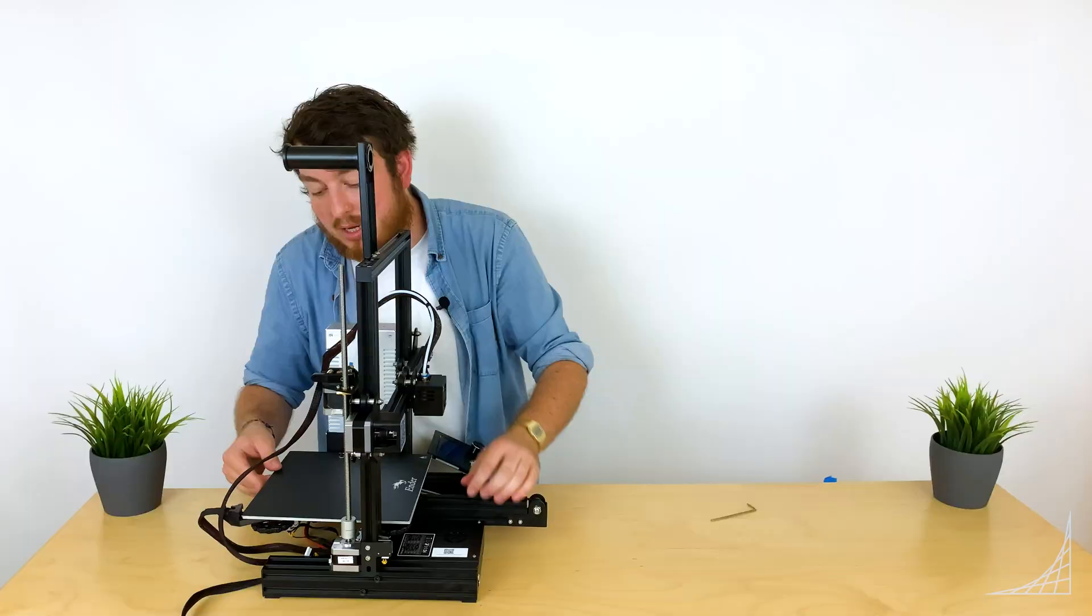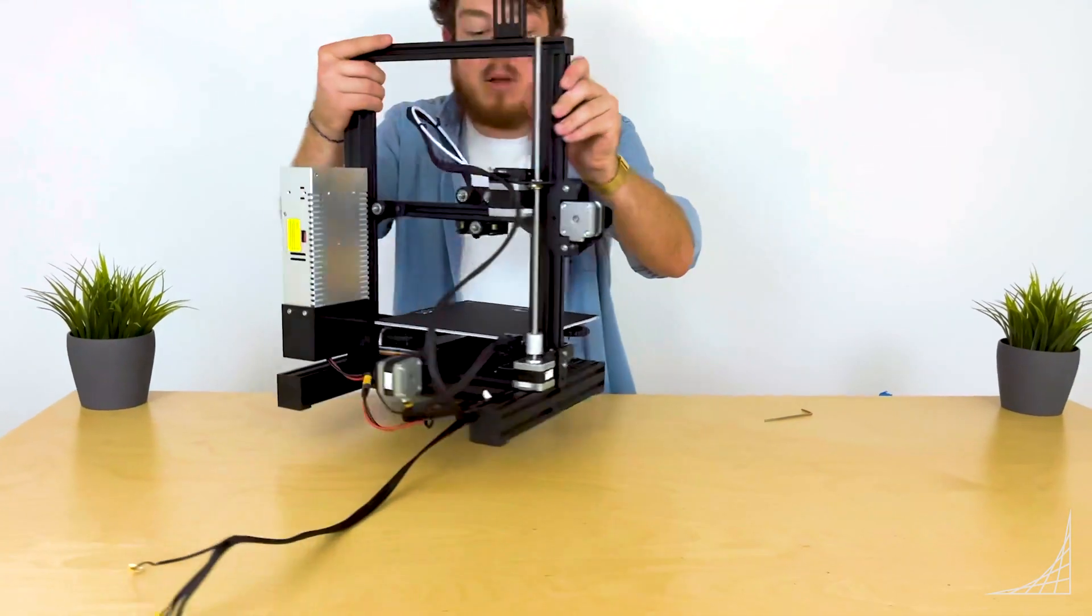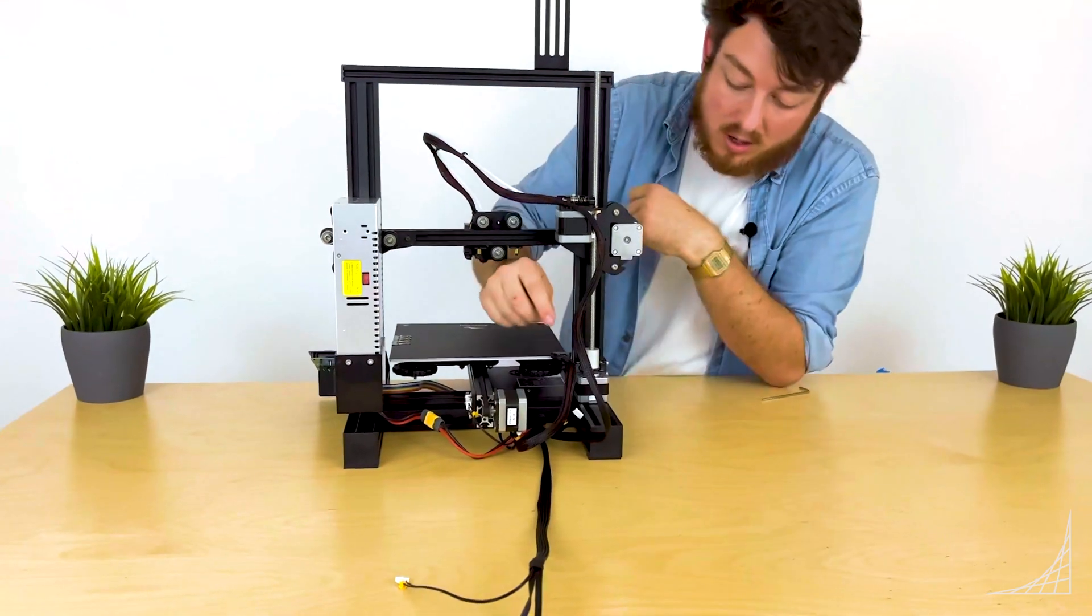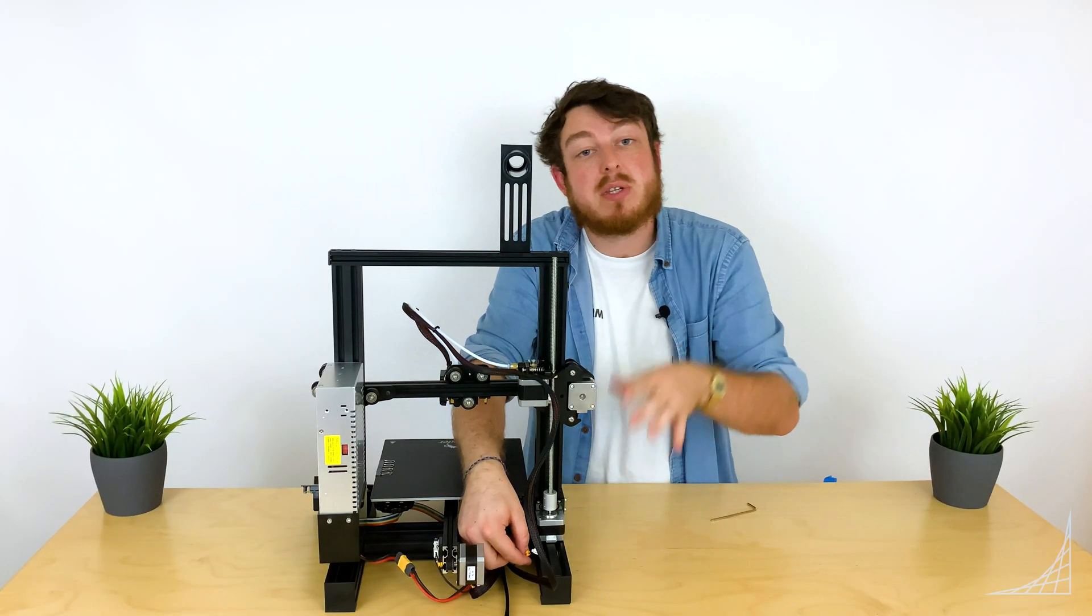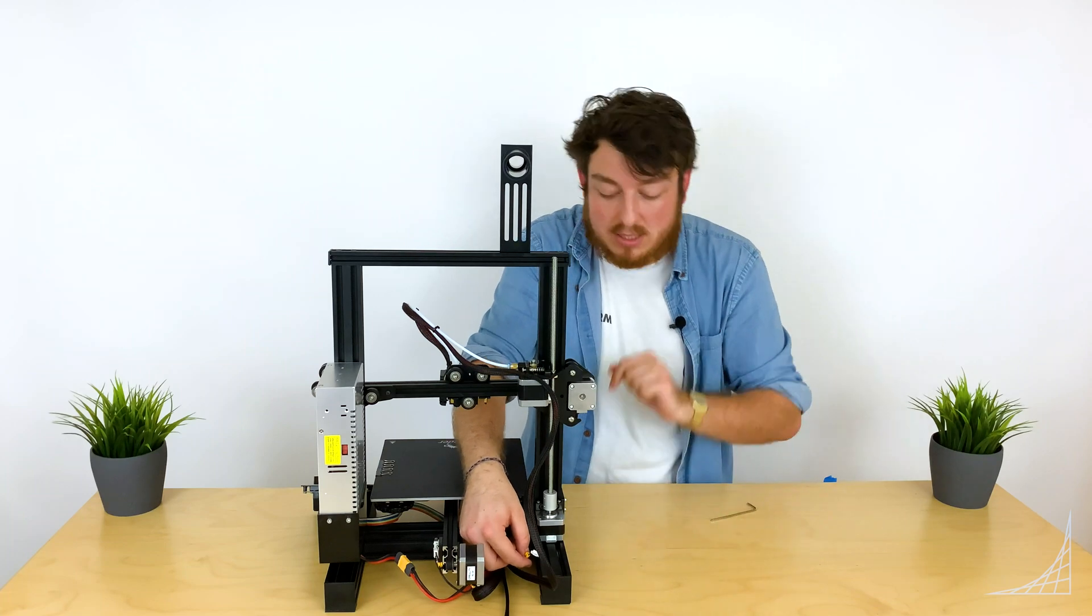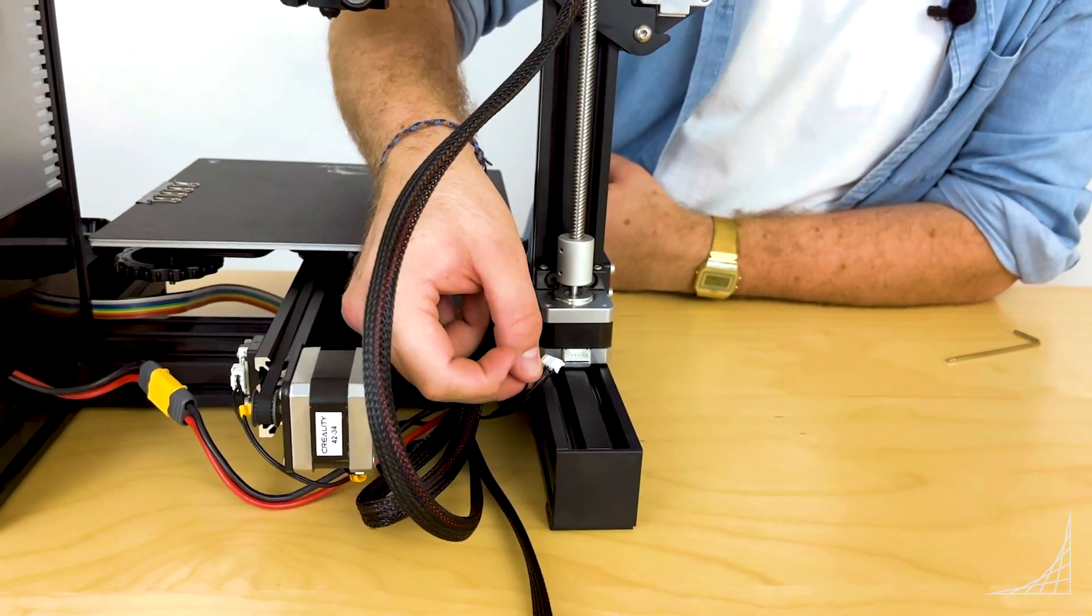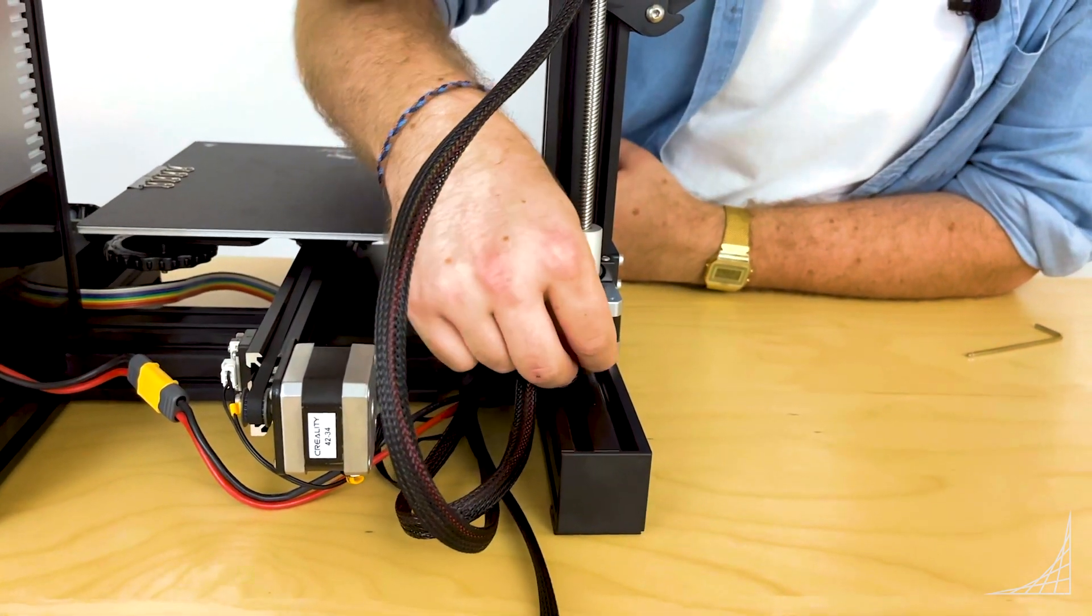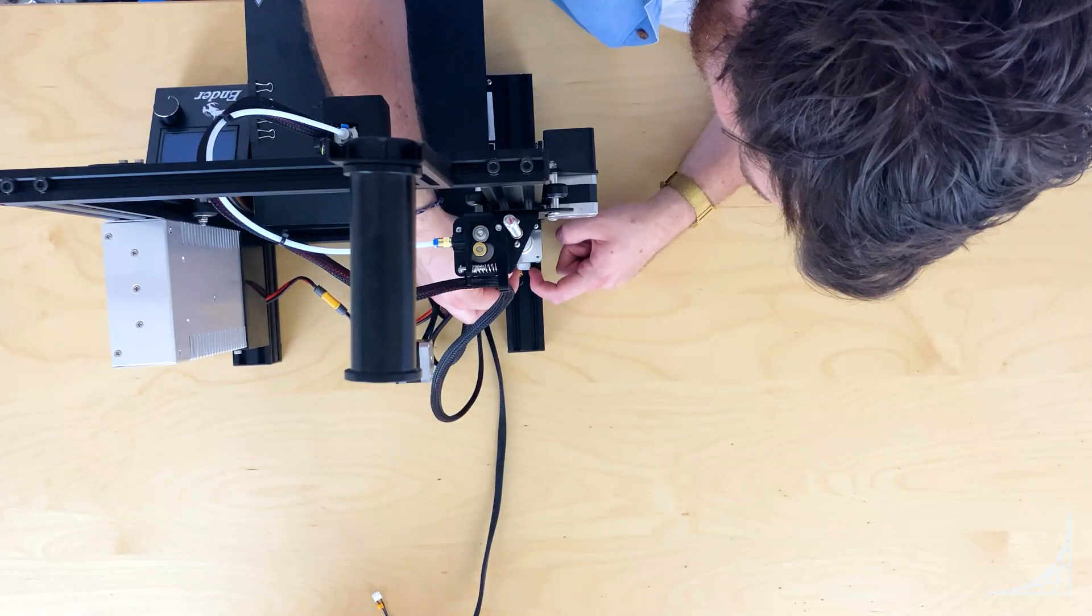Now we can work on our Z motor. On the very back side, we've got this wide connector. Remember, wide connectors go into motors, narrow connectors go into the limit switches. The wide connector coming out of the back simply plugs into the Z motor on the back, and there we go. So now our Z-axis is completely finished.